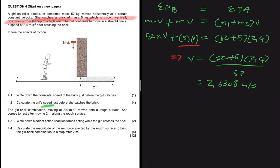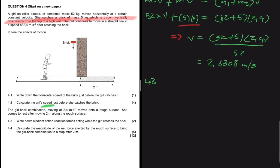Moving to 4.3: write down a pair of action-reaction forces acting while the girl catches the brick. When the girl catches the brick, the brick applies a force on the girl's hands. The weight of the brick acts downward, and the opposing force is the normal force exerted by the girl's hands on the brick — this normal force is why the brick doesn't hit the ground.